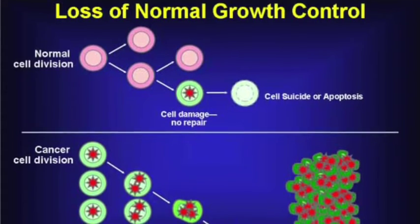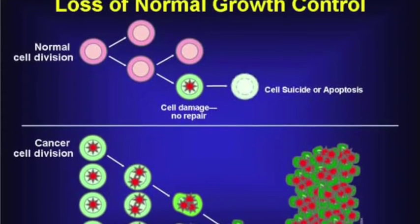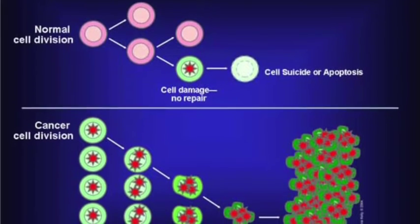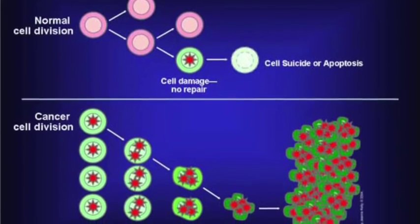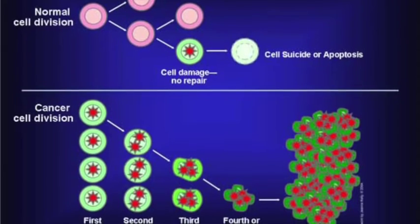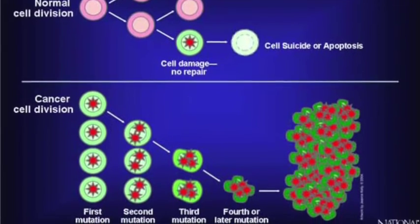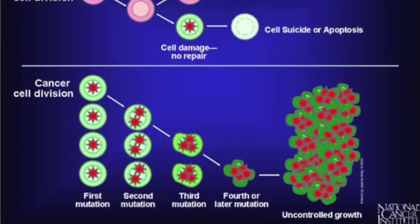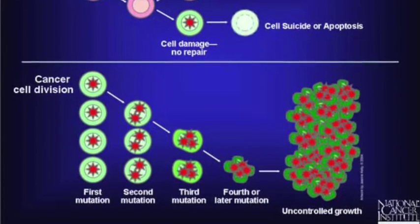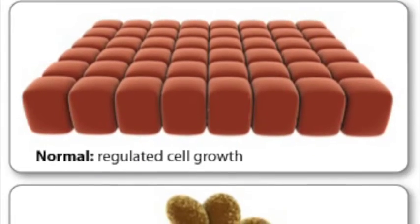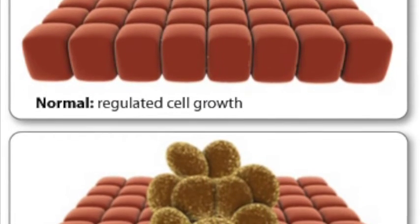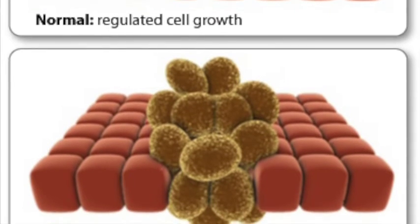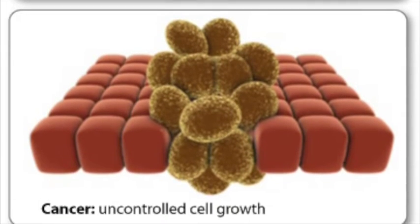You remember how we said normal cells grow, make a certain number of new cells, and then die? Well, in cancer cells, when the instructions get mixed up, the cell has trouble doing those normal things. Cancer cells make way too many new cells, all of which are as sick as they are, and cancer cells don't die when they are supposed to. You can see in these pictures how normal cells work, and then how cancer cells go a little wonky.